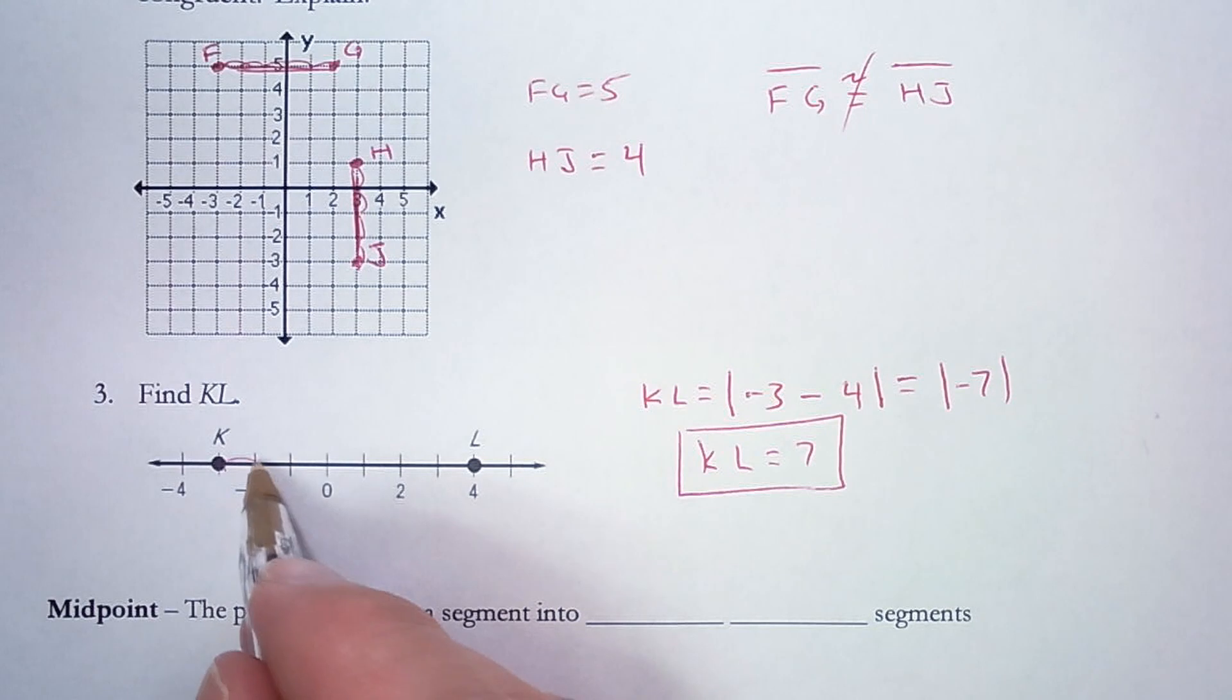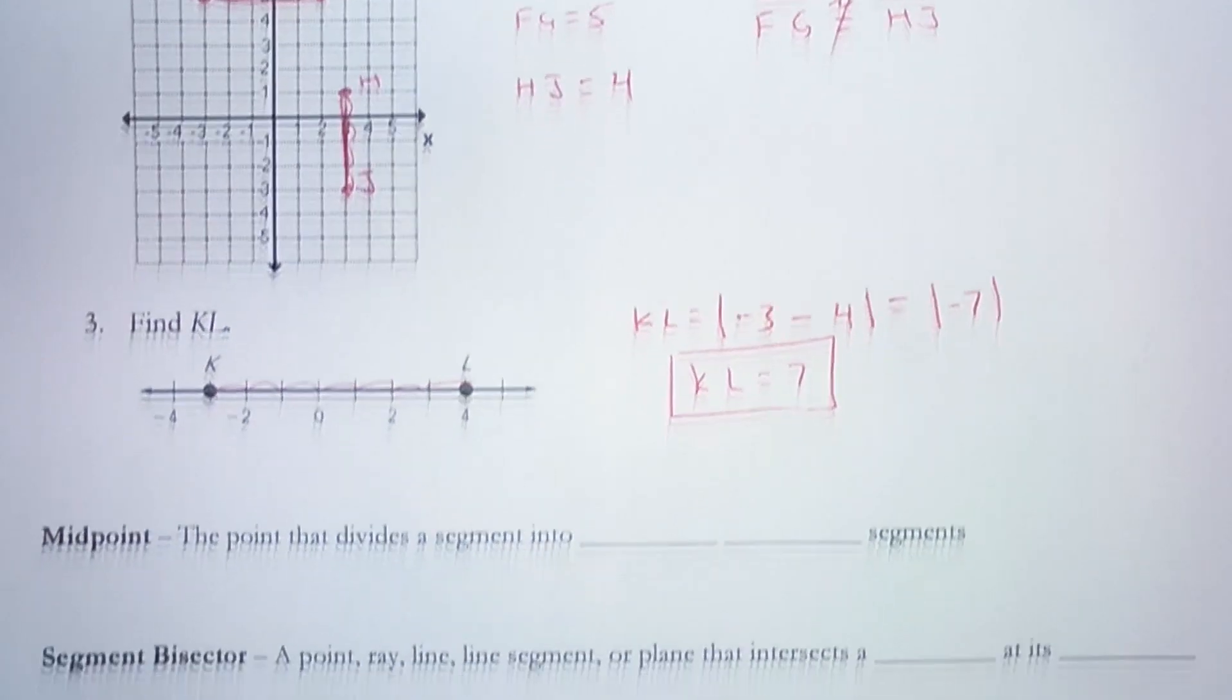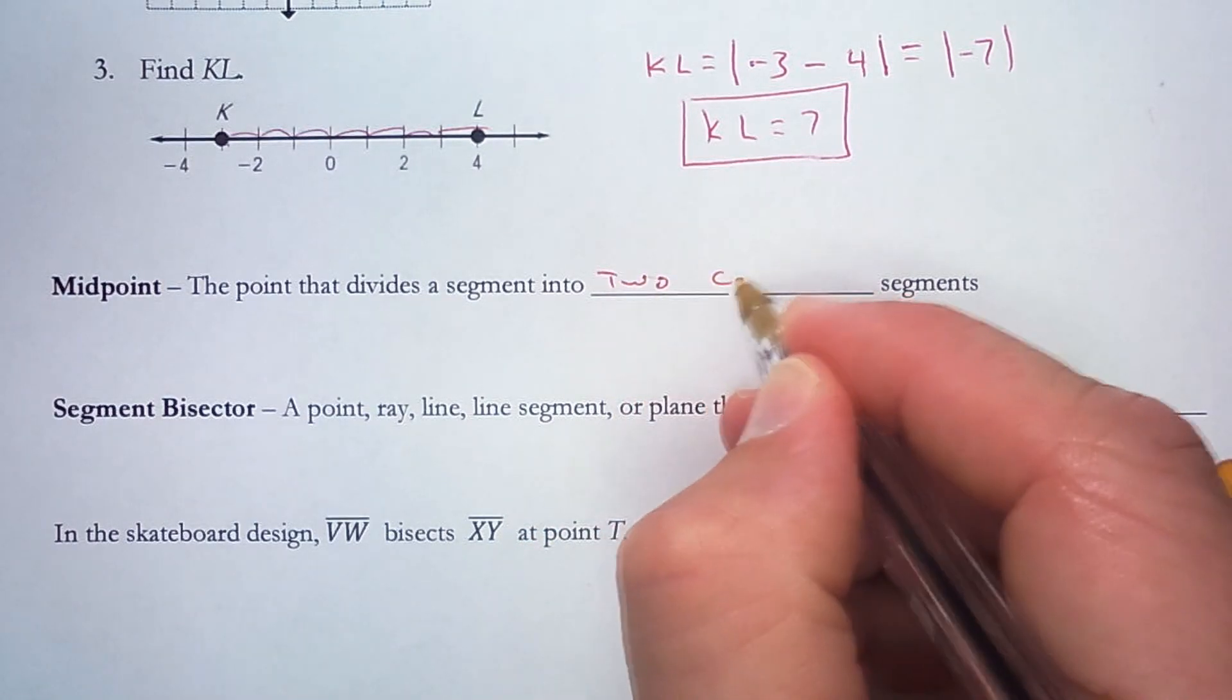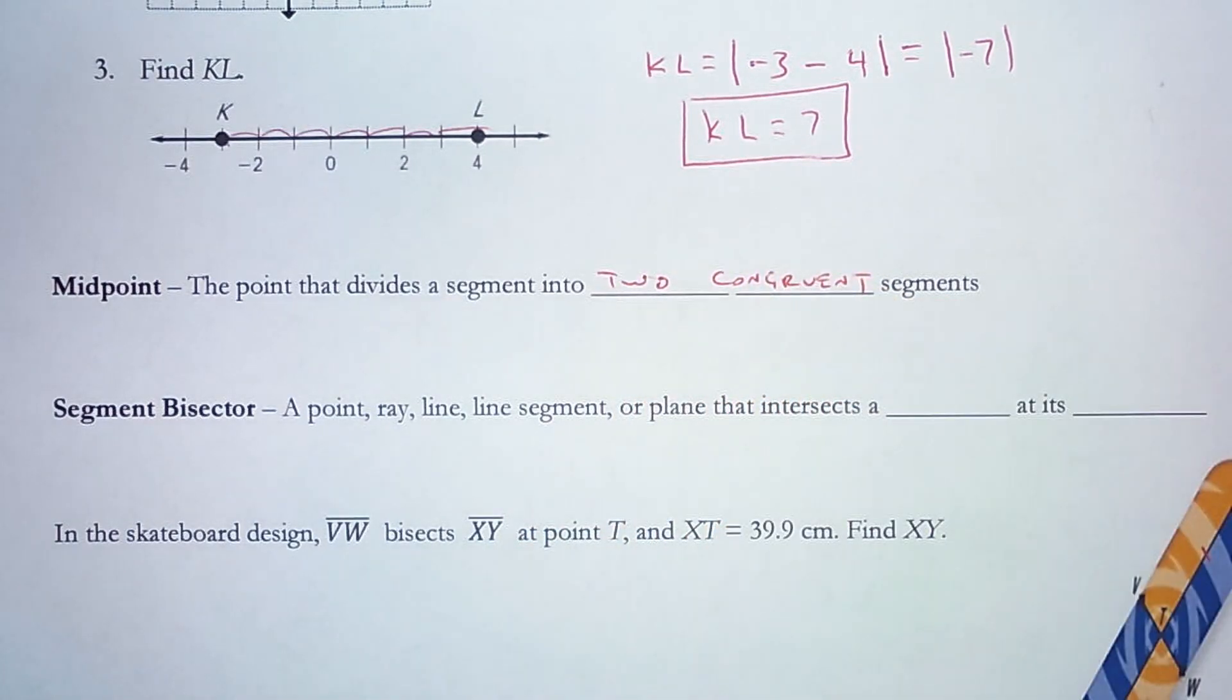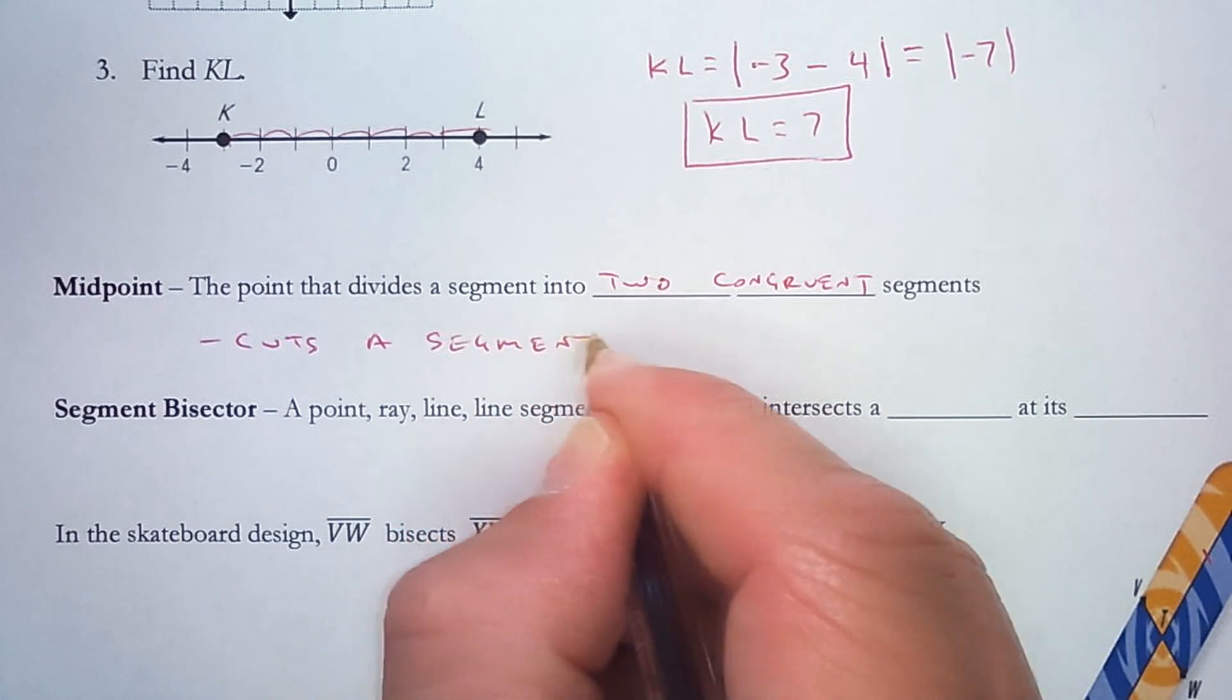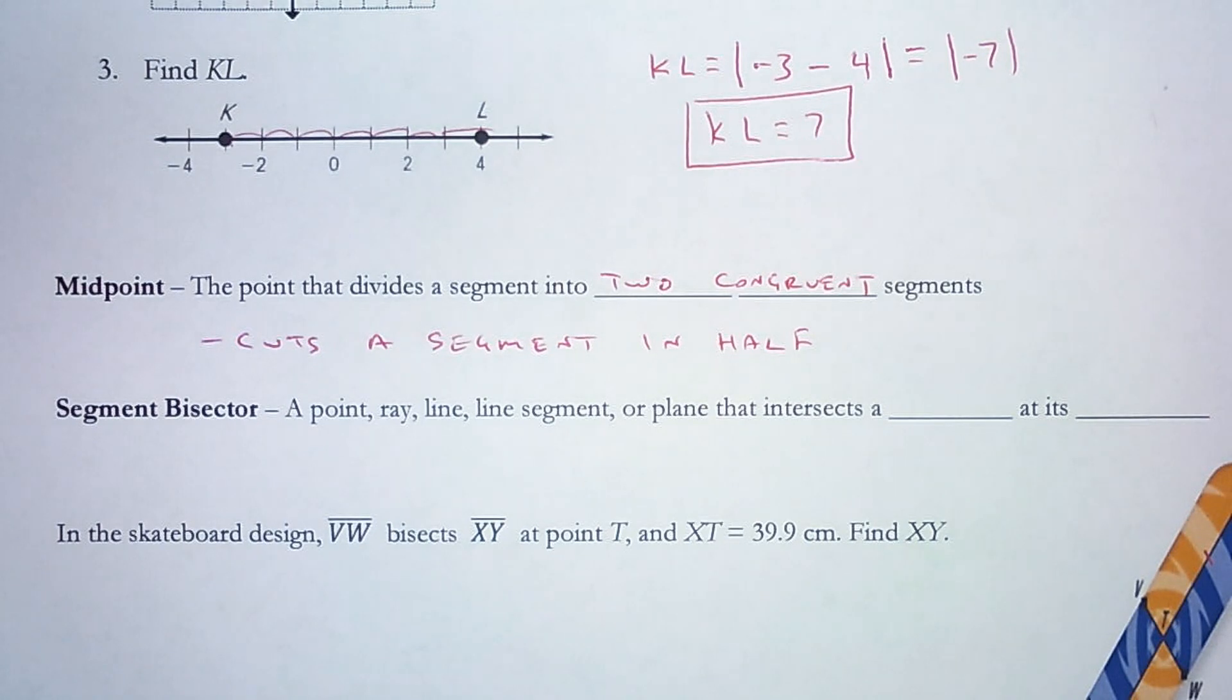I could just count one, two, three, four, five, six, seven. So that's our little review section. Now on to midpoint. A midpoint is the point that divides a segment into two congruent segments. So it cuts a segment in half.